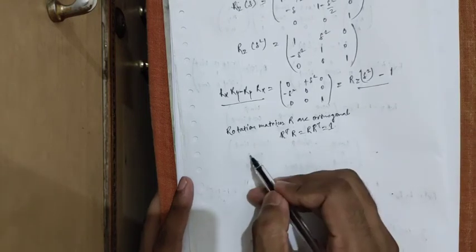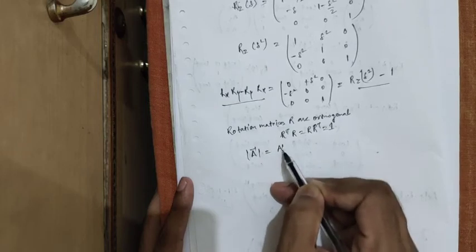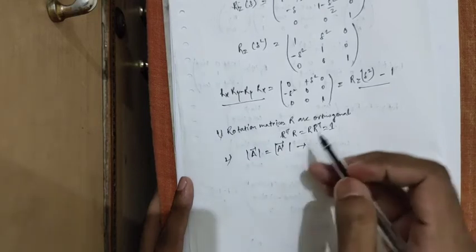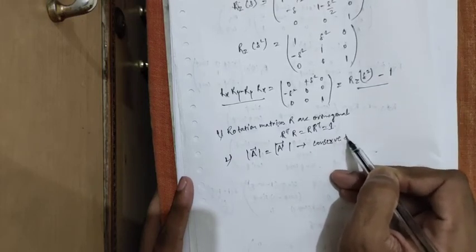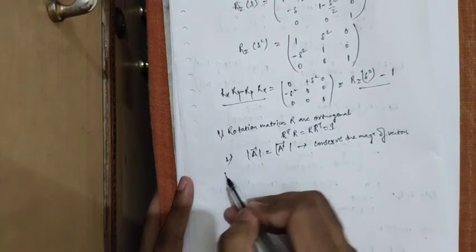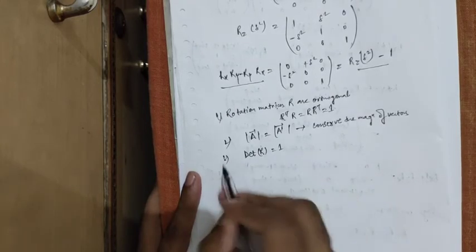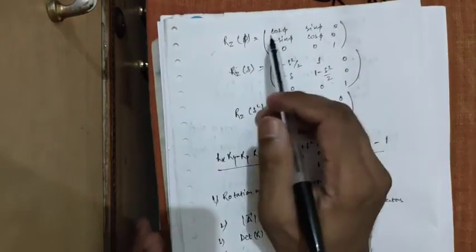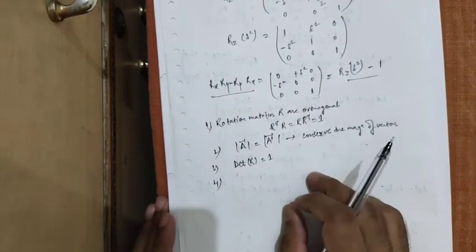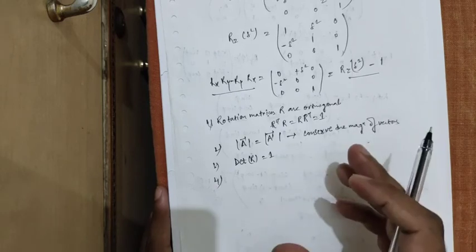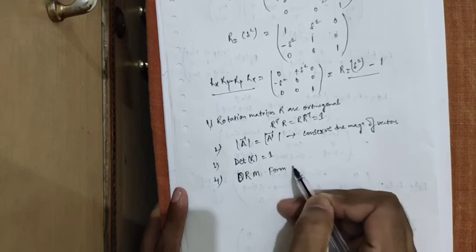In addition, orthogonal matrices conserve the magnitude of vectors — the magnitude of a vector before and after the transformation remains the same. Third, the determinant of the rotational matrices is equal to one. For example, for Rz(φ), the determinant is cos²φ + sin²φ = 1. Fourth, all these orthogonal rotational matrices form a non-Abelian group.